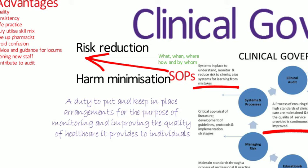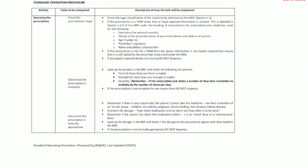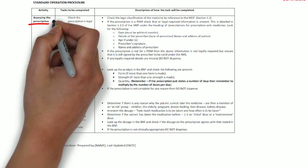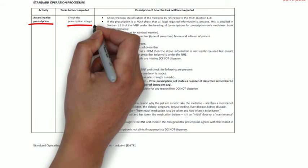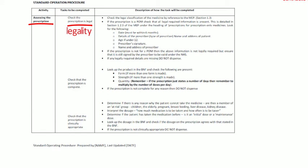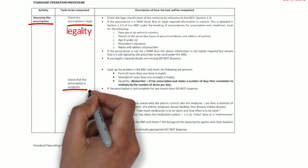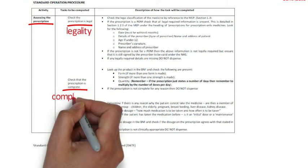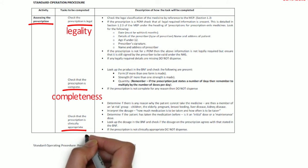Here's a sample standard operating procedure for the dispensing process. On the left-hand side you've got an activity, then tasks to be completed, and then a description of how that task will be completed. In assessing the prescription, you'll first check if the prescription is legal, going through certain checks with the SOP articulating exactly what you need to check and whether you need to check against references such as the MEP. Then you check that the prescription is complete, that specific requirements are met, and also whether the prescription is clinically appropriate.